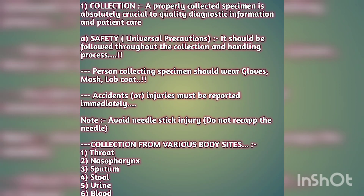For throat swab, the sample is collected using a swab. For nasopharyngeal collection — used for influenza A and B — the swab is taken from both nostrils. For Streptococcus, we collect from the throat. For sputum, we collect an early morning sample without saliva — only sputum is acceptable.